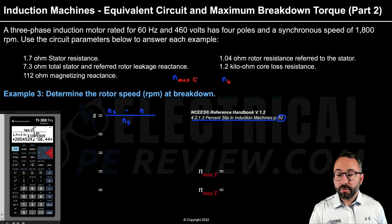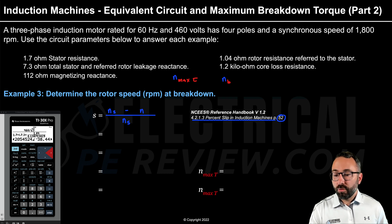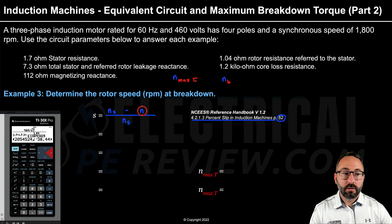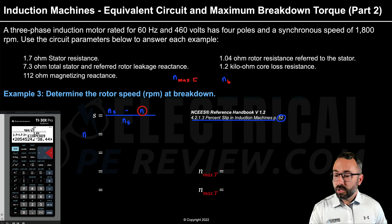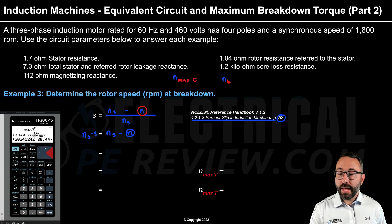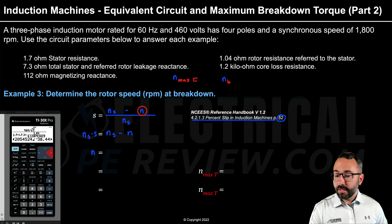To do that, we're going to use the formula in the reference handbook on page 52 under the header 4213 percent slip in induction machines. That formula is: slip equals the ratio of the synchronous speed minus the rotor speed, divided by the synchronous speed of the motor. Since we're solving for rotor speed n, we want to rearrange this formula. Moving things around: synchronous speed times slip equals synchronous speed minus rotor speed. That gives us rotor speed n equals synchronous speed minus the product of synchronous speed and slip.